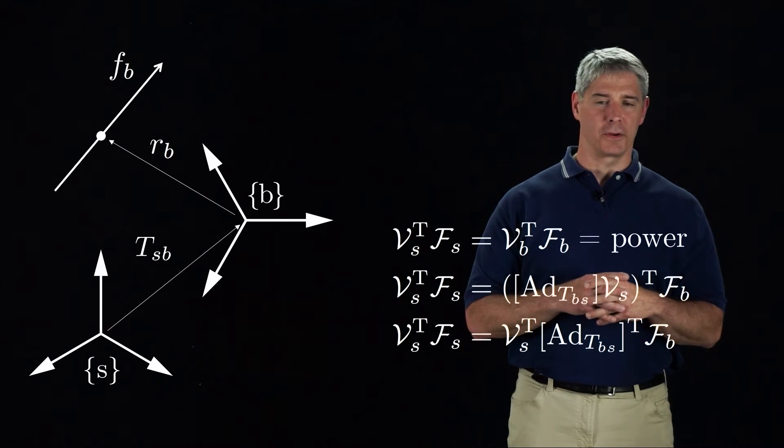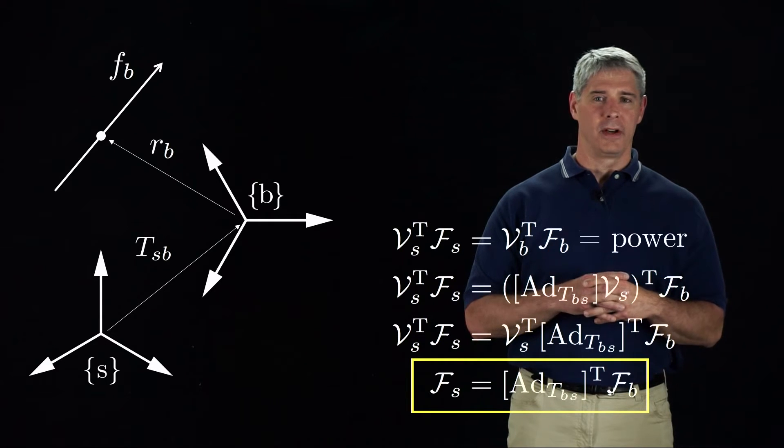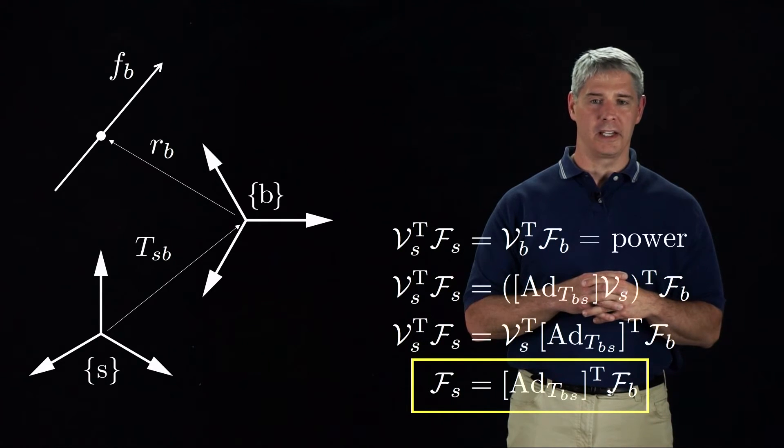Finally, this equation holds for all twists VS, so it simplifies to the relationship we are looking for, changing the coordinate frame of the wrench from the B frame to the S frame.